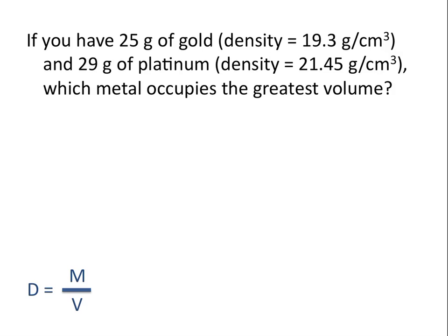If you have 25 grams of gold with a density of 19.3 grams per centimeter cubed and 29 grams of platinum, which has a density of 21.45 grams per centimeter cubed, which metal would occupy the greatest volume?